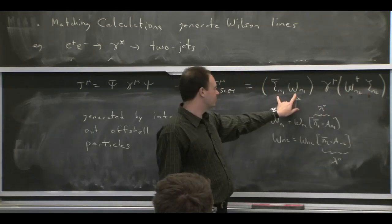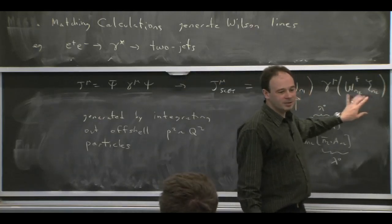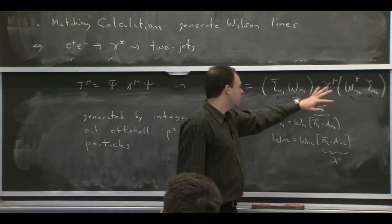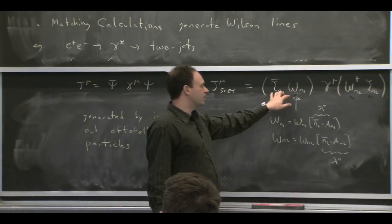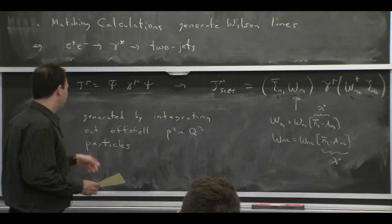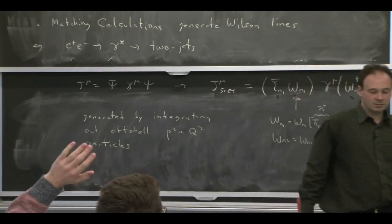This guy doesn't transform under the n1 collinear gauge transformations. This guy does. So this guy's invariant. This guy's invariant under n2 collinear gauge transformations. They both transform under ultra soft gauge transformations, so they get connected in that way. And again, you have sort of, if you just think about gauge symmetry and how it should come out, then you would have guessed that it should be this. But you can also derive it this way.